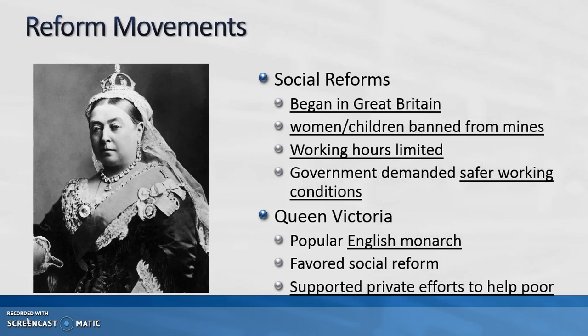We begin to see some reform movements during this time, beginning in Great Britain. Women and children were banned from the mines because they were considered too dangerous, and working hours were limited in some cases. The government also demanded safer working conditions for children and other factory workers. Queen Victoria, a very popular English monarch, favored these social reforms and supported efforts by private entities to help the poor community.